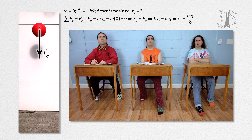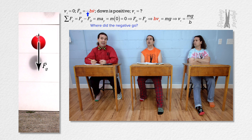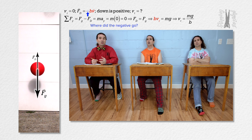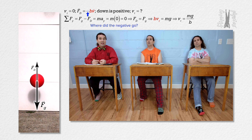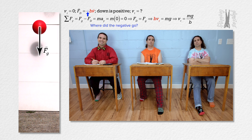What happens to the negative in the drag force equation? That negative gives the direction of the drag force. By drawing the free body diagram and identifying the drag force to be in the negative y direction, we have already identified the direction of the drag force and do not need to include that negative. And that is called deja vu. Thank you, Bobby.